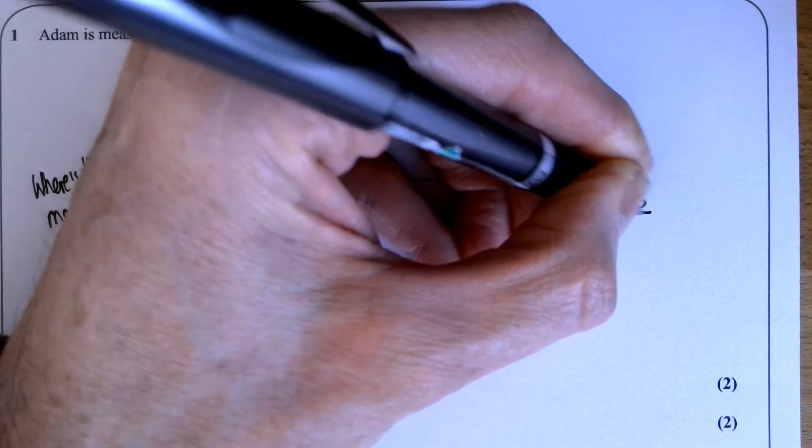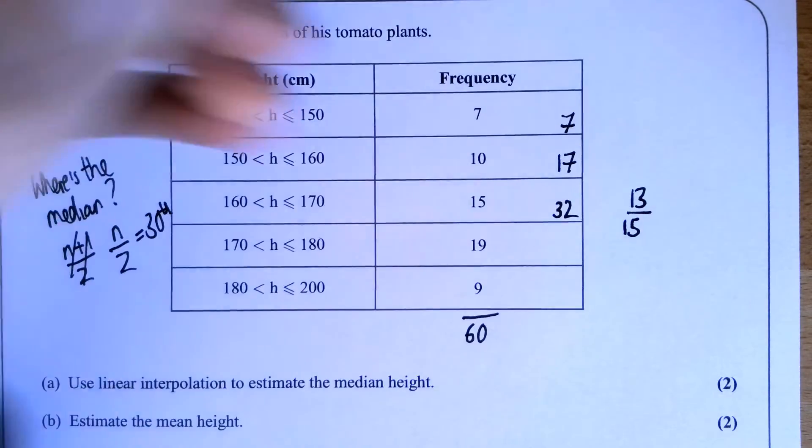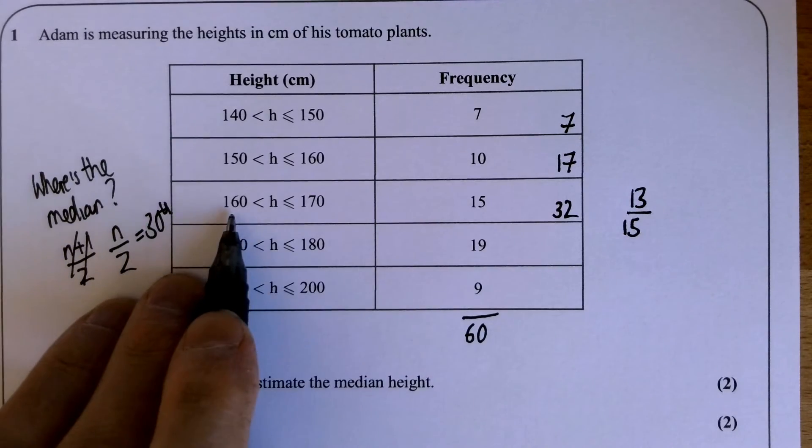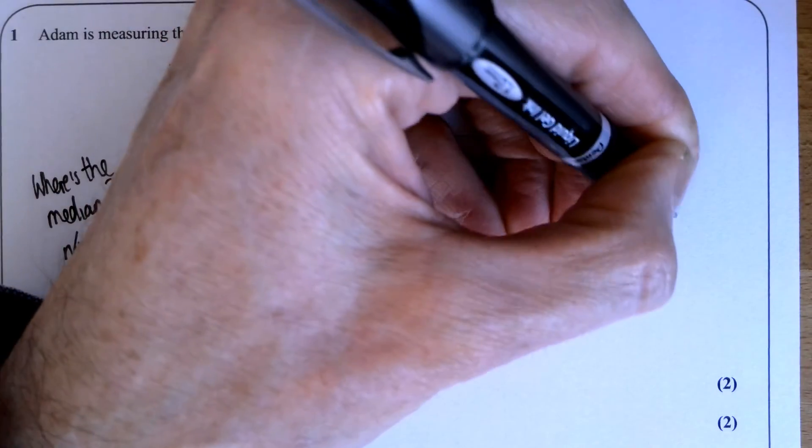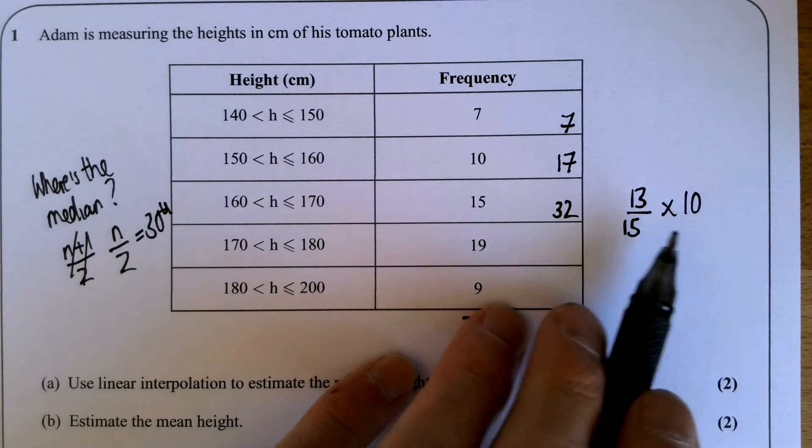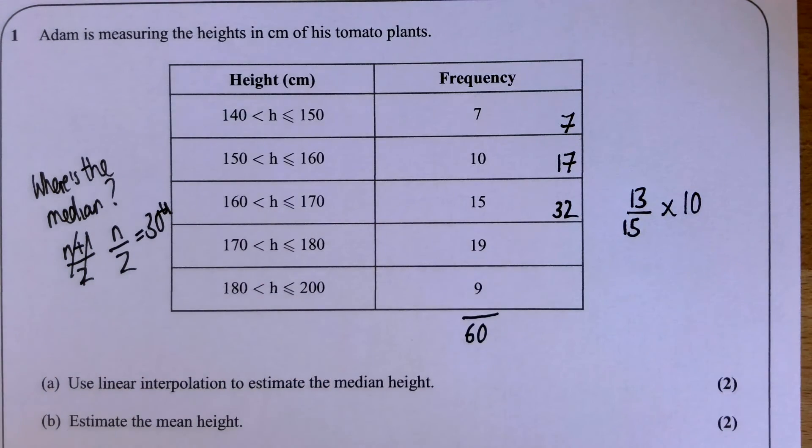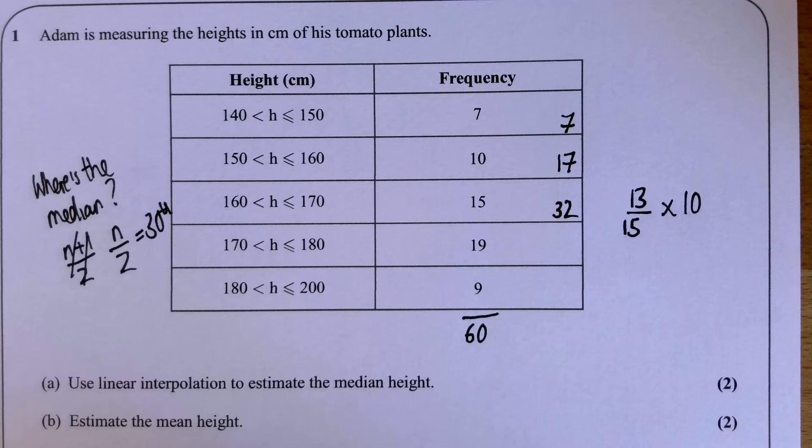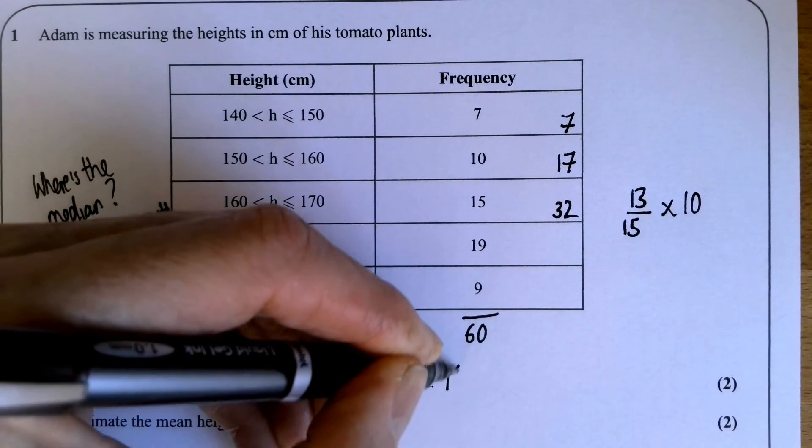Now by the end of the previous group, I've counted 17 people, so I need to go 13 people into this group. There are 15 people in the group, so the fraction I need to go into it is 13 out of 15. The group is 10 wide, so that's how far into that group I need to go.